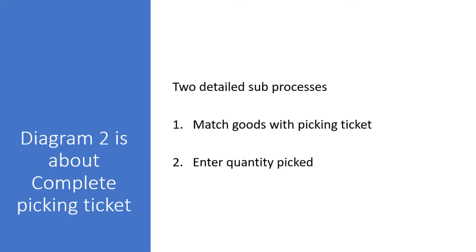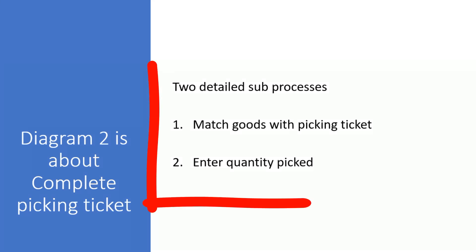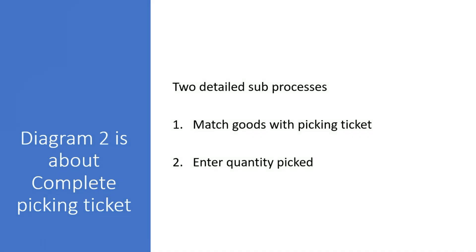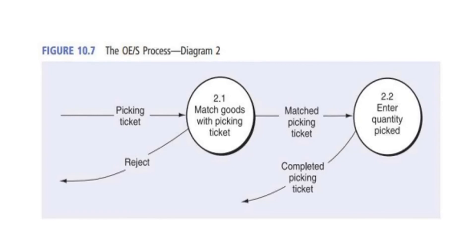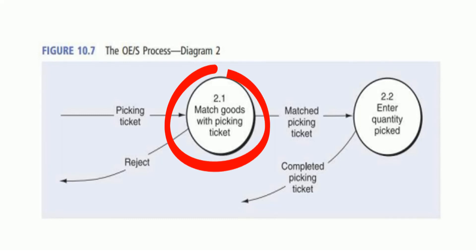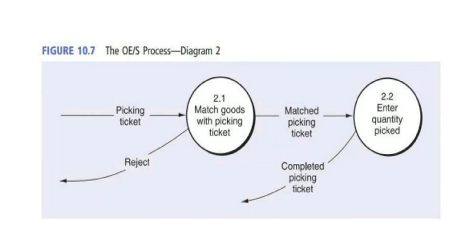The second diagram is about completing the picking ticket. This process can be broken into two sub-processes: match goods with picking ticket, and enter quantity picked. The picking ticket is received and matched with the goods to verify that the order and picking ticket agree; otherwise it is rejected. The matched picking ticket leads to entering the quantity picked from the warehouse, resulting in a completed picking ticket that is sent to the shipping department.